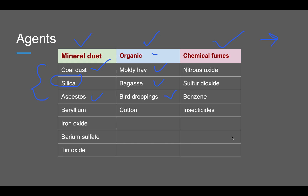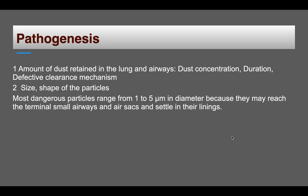Whether pneumoconiosis develops depends on certain factors. First is the amount of dust retained in the lung or airway — higher concentration means higher risk. Second is the duration of exposure. Third is defective clearance mechanism; in smokers, the ciliary mechanism is defective, increasing the risk of developing pneumoconiosis.